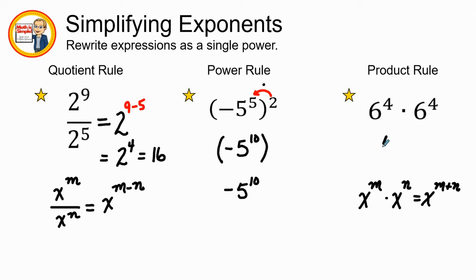So in this situation we are going to keep our base of six, and then we are going to add our first exponent to the second exponent, which will give us an answer of: keep our base six, four plus four is eight, so we have six to the eighth power.